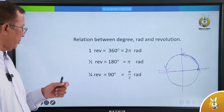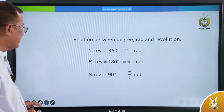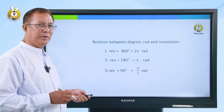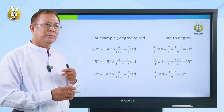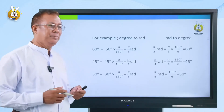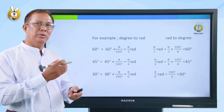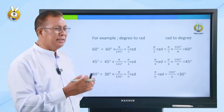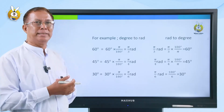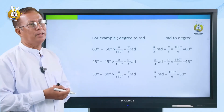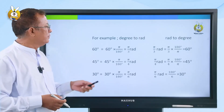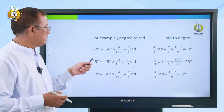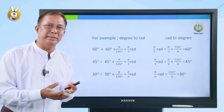The relationship: degree to radians. The conversion between degrees and radians. Degree to radians — 60 degrees and the radian value.